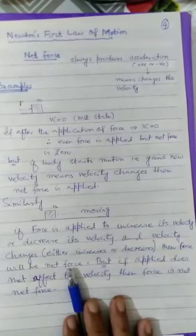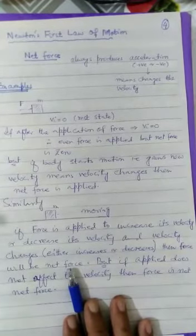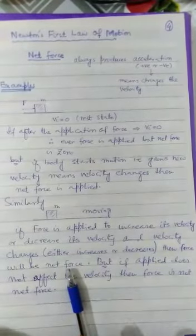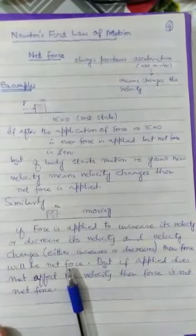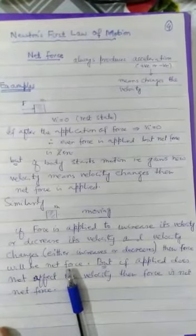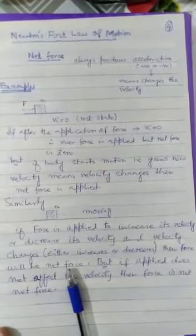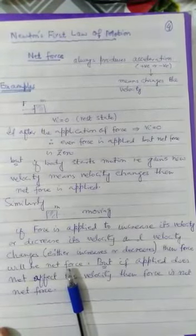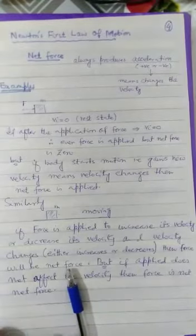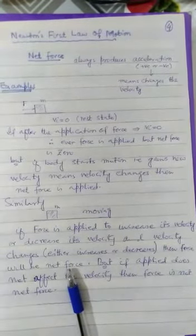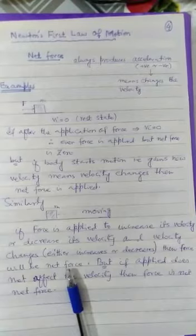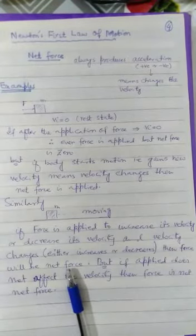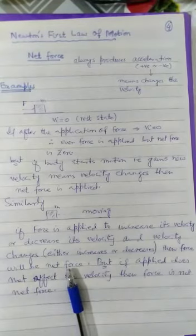If velocity changes, either velocity increases or decreases, then force will be net force. But even if body is moving with some velocity and you have applied force and your applied force is not changing any kind of velocity, not producing any acceleration, not changing the velocity, even though you have applied force, at that time you can say your force is applied force but not net force, because net force always changes the velocity, always produces acceleration.